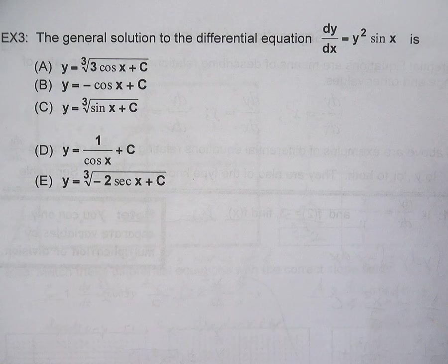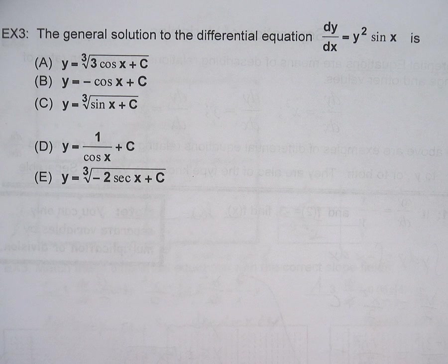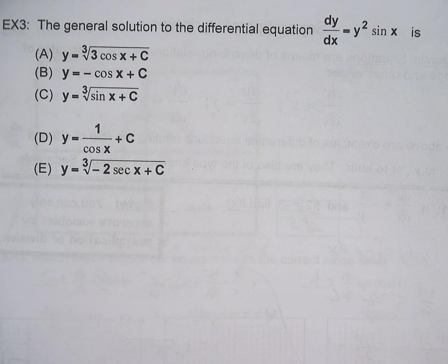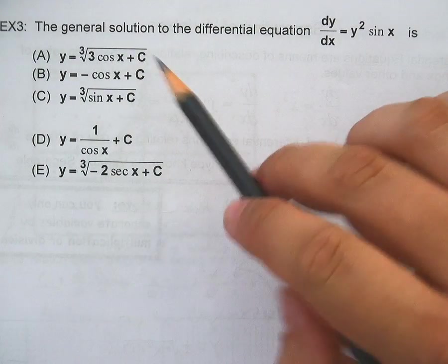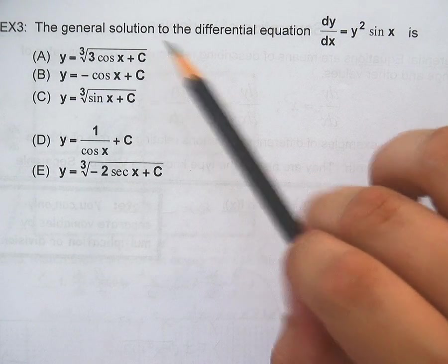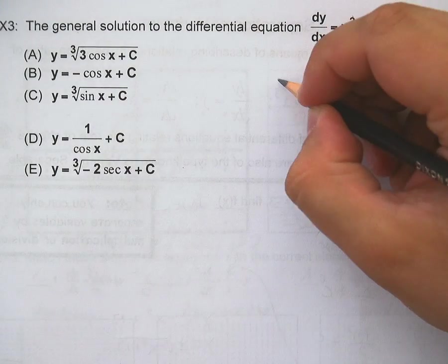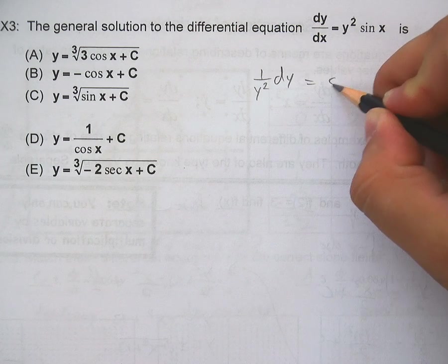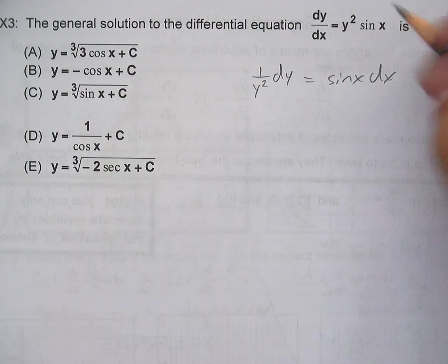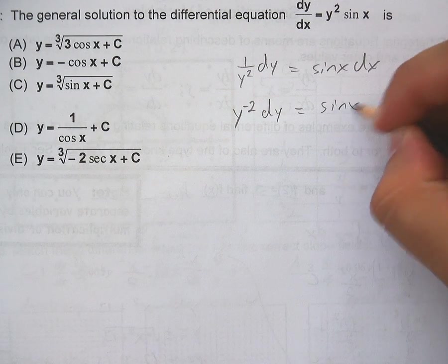And it wouldn't be calculus if we didn't have trig. So last one. Example 3. dy over dx equals y² sine x. Now I can divide y² to the other side. So I'm going to do just that. And it's asking me the general solution. General solution means it's going to have a plus c. First, get this one over here. We have 1 over y² dy equals sine x dx. So this is y^(-2) dy equals sine x dx.